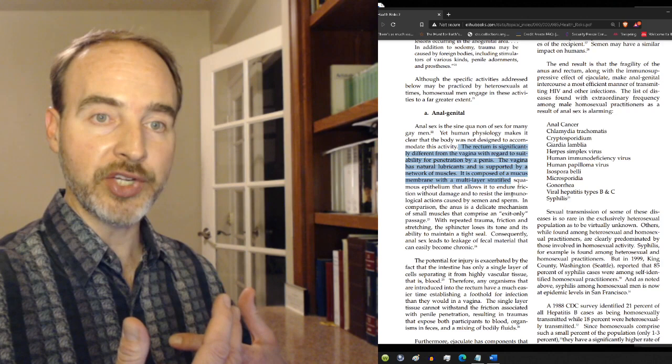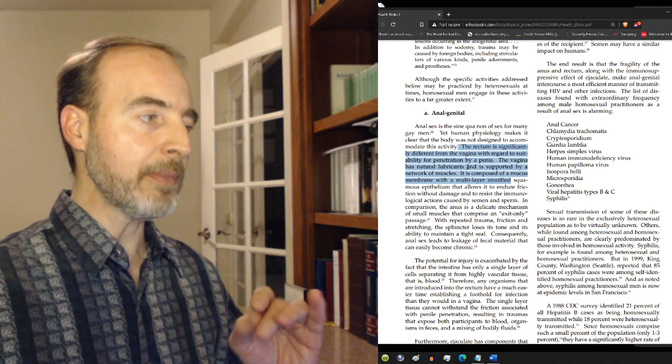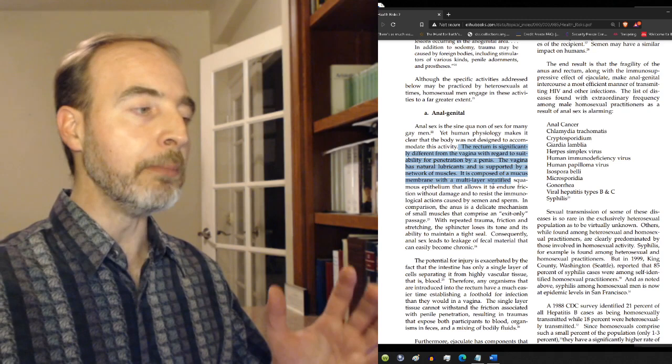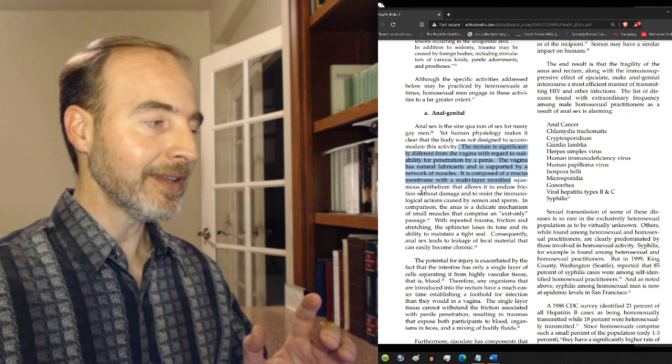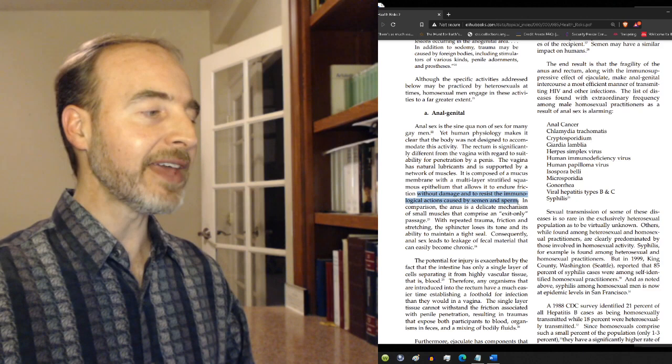The vagina has natural lubricants and is supported by a network of muscles. It is composed of a mucous membrane with a multi-layered stratified squamous epithelium that allows it to endure friction without damage and to resist the immunological actions caused by semen and sperm like I was talking about before.